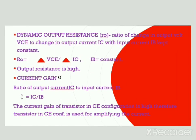This is why the transistor in CE configuration is used for amplifying current. I hope you guys understand and learn from this.